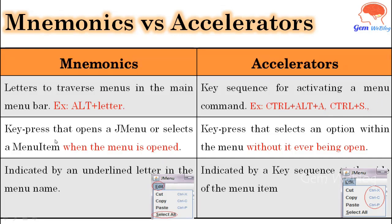Another difference: whenever you press mnemonics, the menu items of the particular menu have to be opened first. Whereas with accelerators, the particular menu need not be in an open state — whenever you press the accelerator, the corresponding command will be executed directly. Mnemonics are indicated by an underline in the menu name, while accelerators are shown as a key sequence displayed beside the menu items.